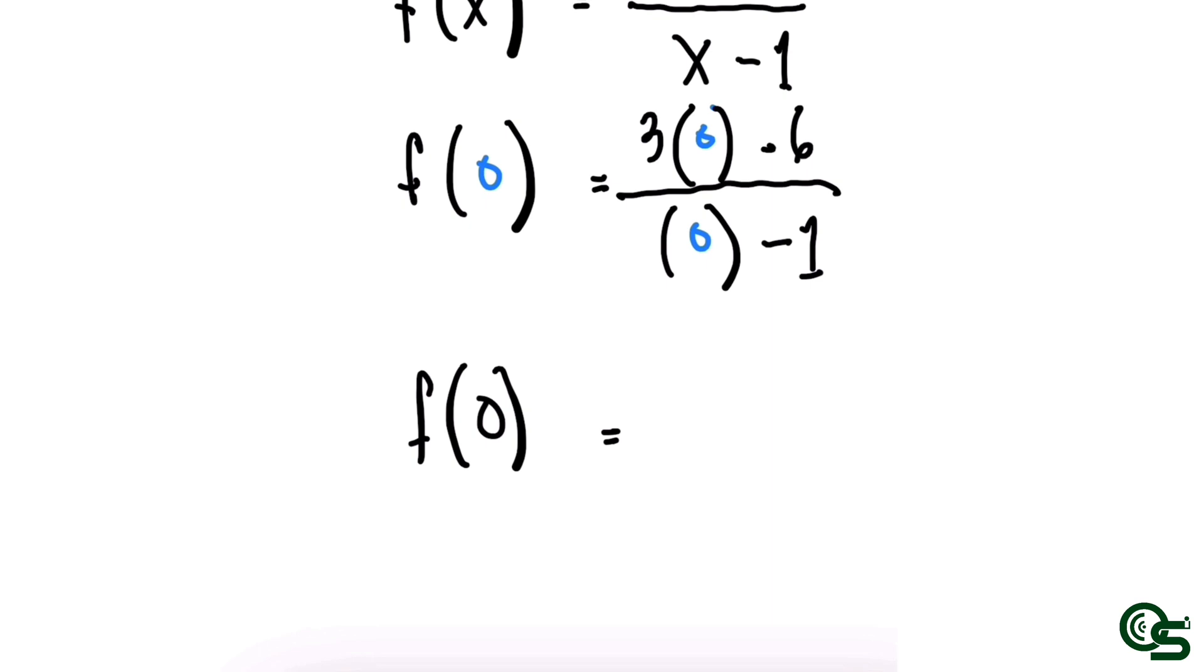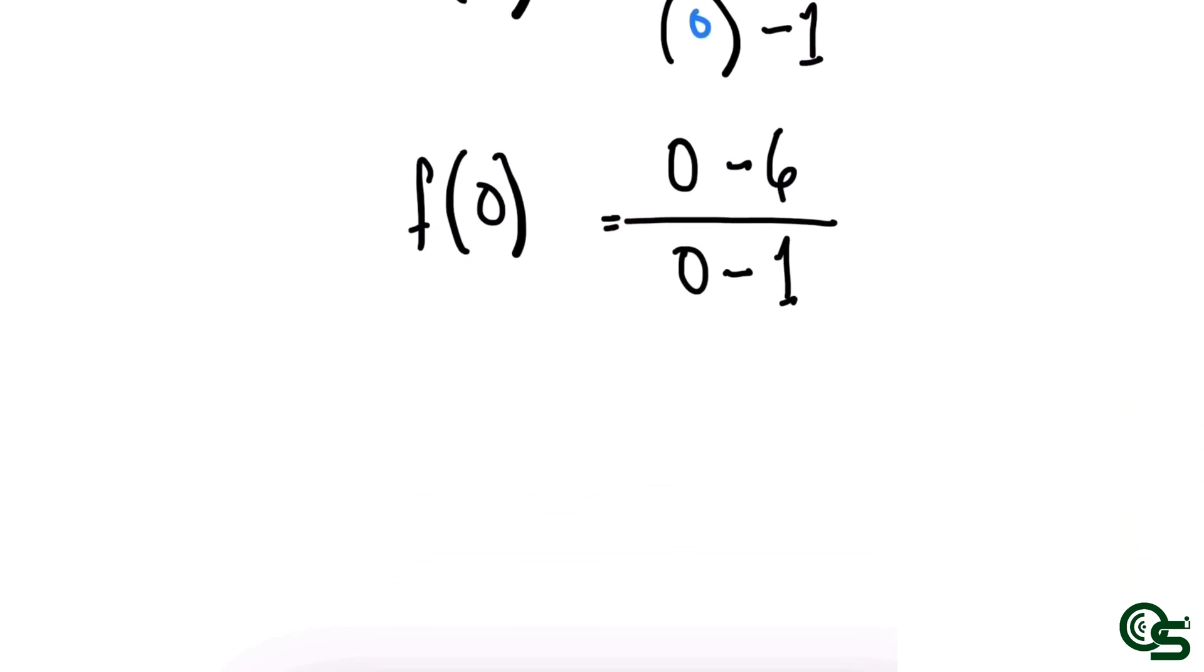Then f(0) is equal to 0 minus 6 all over 0 minus 1. Apply the operation in both numerator and denominator, so f(0) is equal to negative 6 over negative 1.